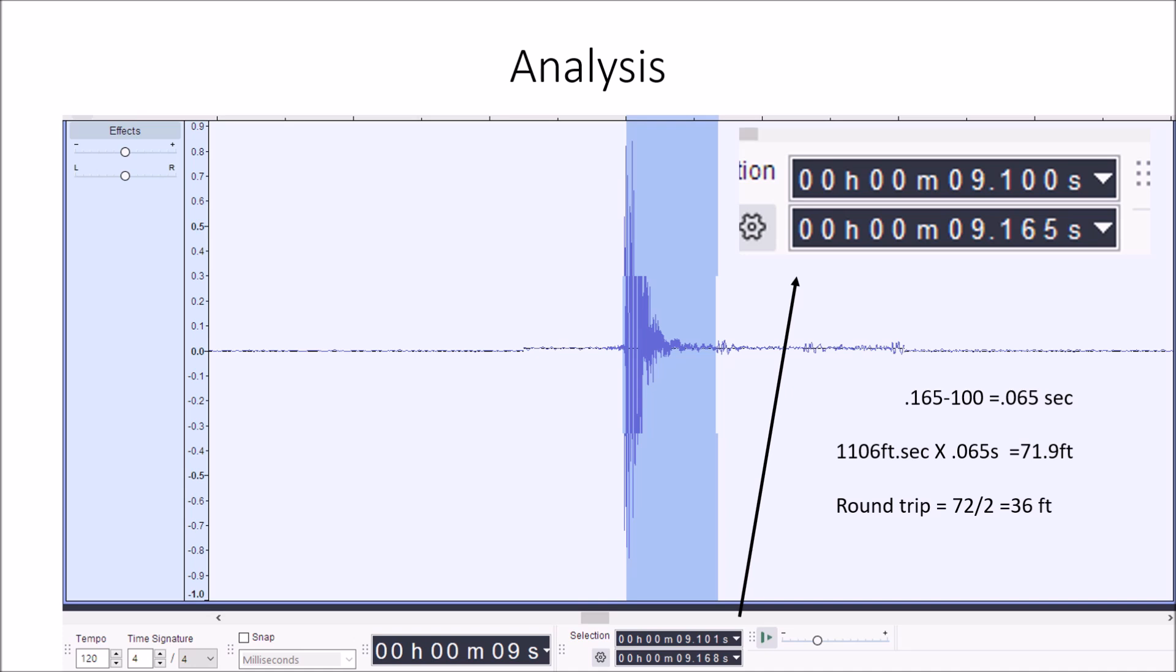So in audacity you have the ability to put markers along the timeline and it'll measure the time difference between the two markers. In this case the marker on the left here started at 9.100 seconds. And it ended right around the echo here at 9.165 seconds. So if you subtract the two you get 0.065 seconds or 65 milliseconds. You multiply that by the speed of sound at 50 degrees Fahrenheit we measured or we looked up as 1106 feet per second comes out to be about 72 feet. But that's the time travel going down and coming back up. So you have to divide that by two and it comes out to be 36 feet which is pretty close.